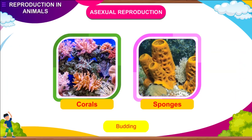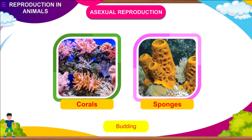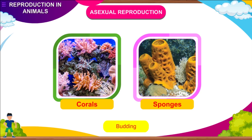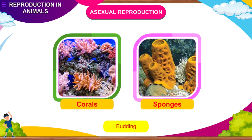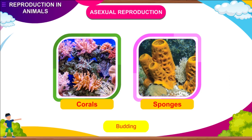In corals and sponges, buds do not separate out but remain attached to the parent organism. They grow to full size and reproduce again and again, producing a colony. Besides these two processes, there are other methods of asexual reproduction about which you will study in the higher classes.